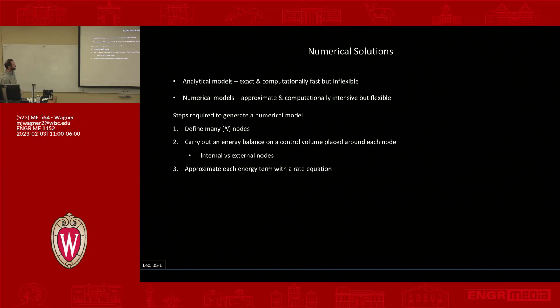So the steps that are required to generate a numerical model. So the first thing you're going to do is you're going to define many, many meaning N nodes. And we'll talk about what that means to have many nodes. Basically, it just means you need enough, you need enough so that your answer stops changing.